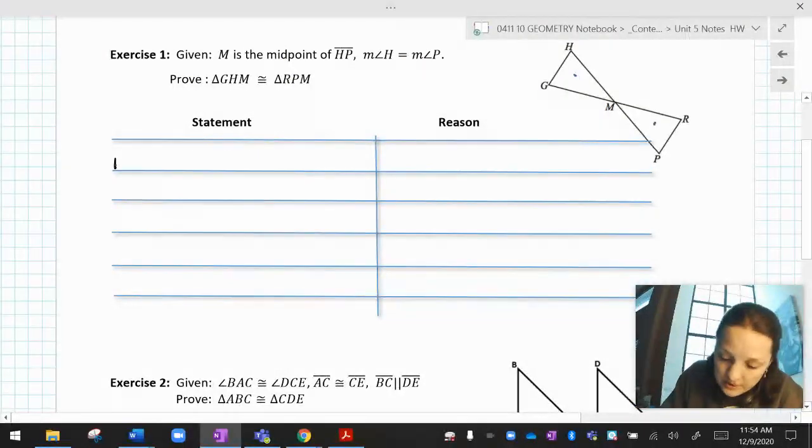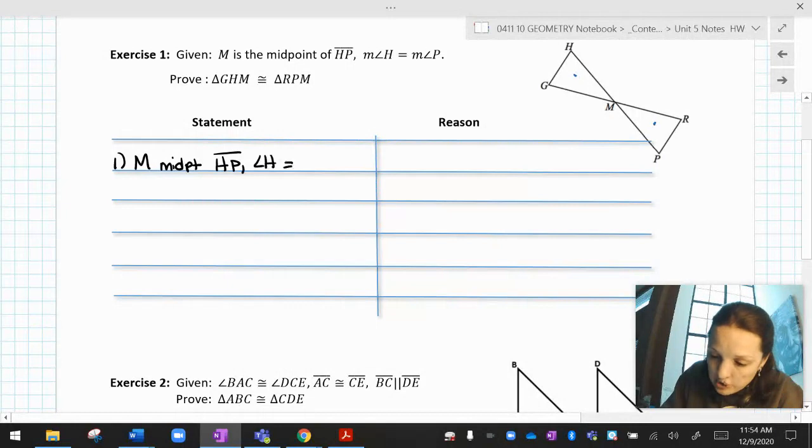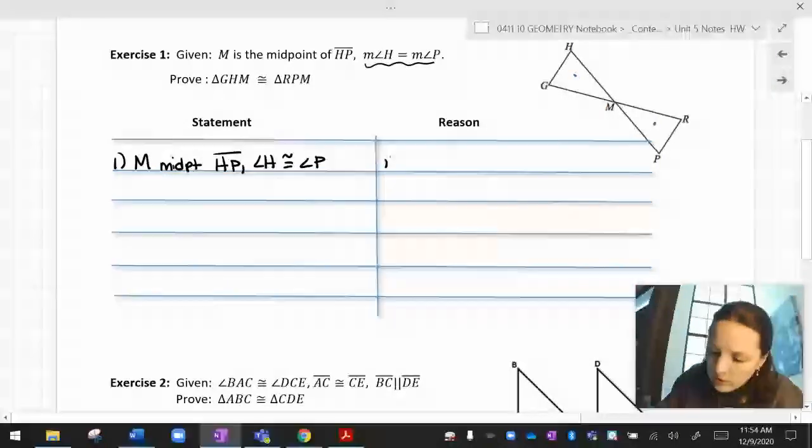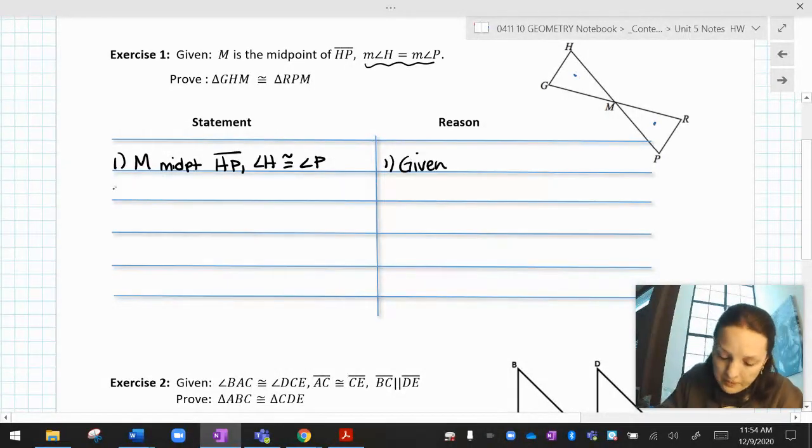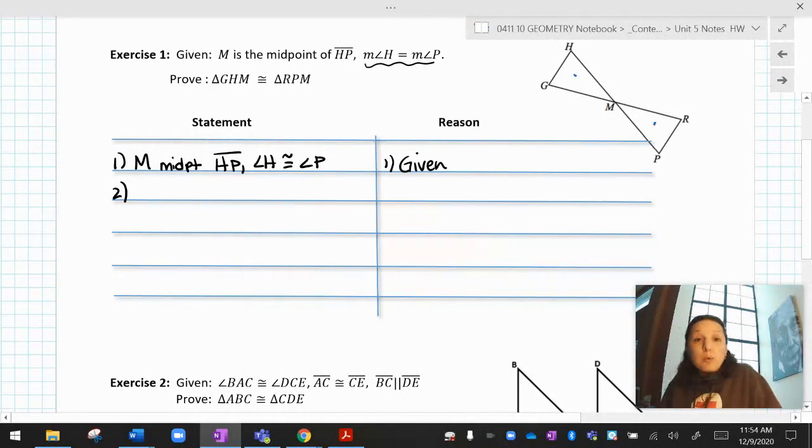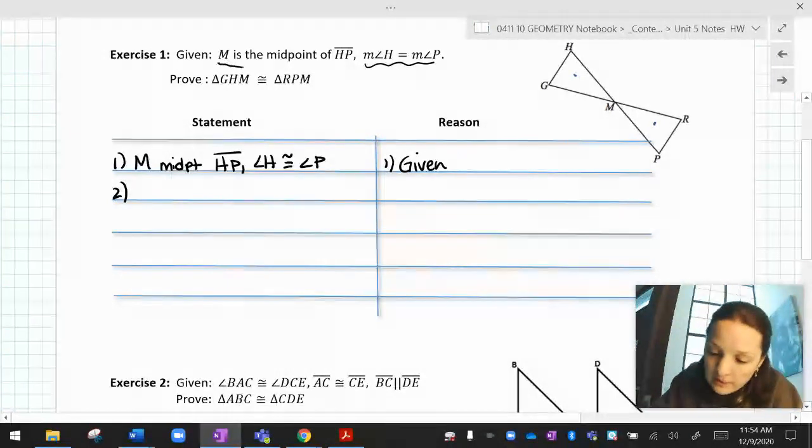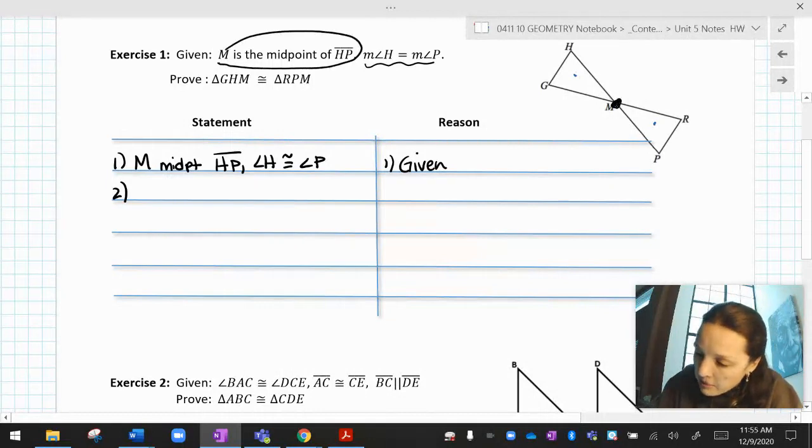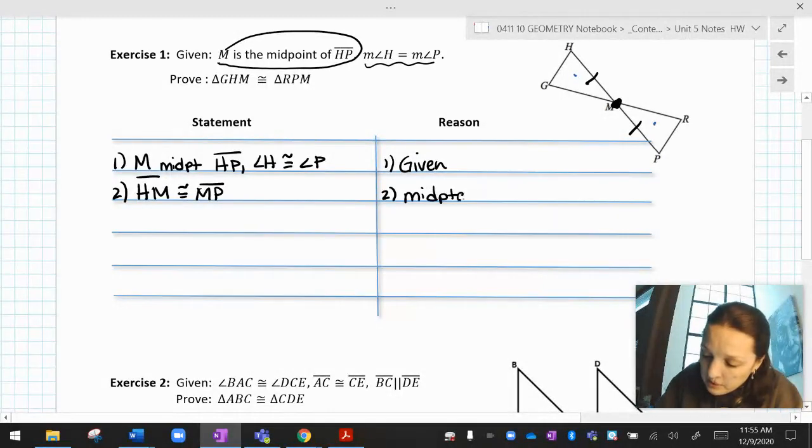So step one is restate your givens. So M is the midpoint of HP, and angle H is congruent to angle P. Notice I changed this equality to a congruence. That's totally okay. All right, that's given. Now, once you restate the givens, you want to look at those and see if they lead to anything else. So given that M is the midpoint of HP, M is in the middle of H and P, that would make HM and MP congruent. So HM is congruent to MP because midpoints create two congruent segments.